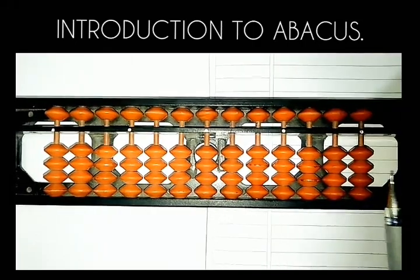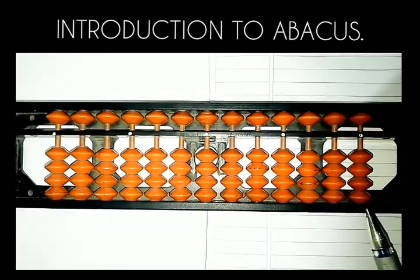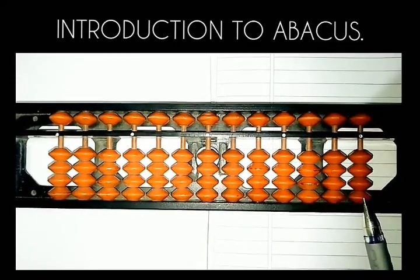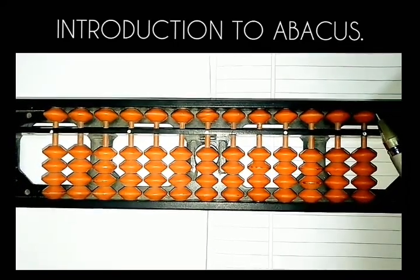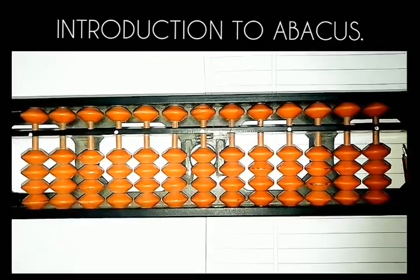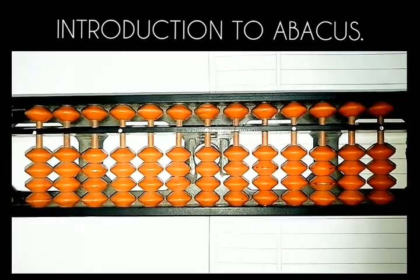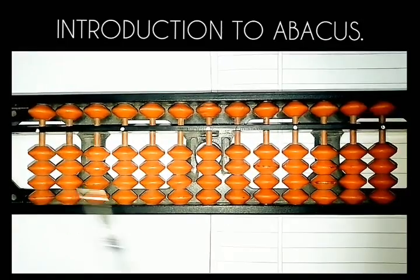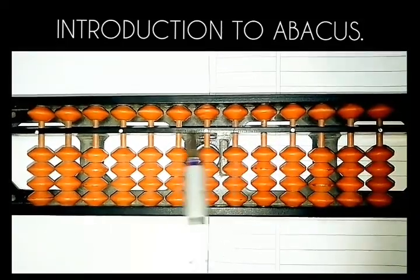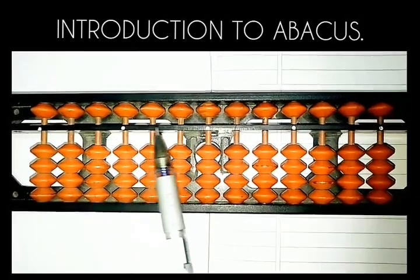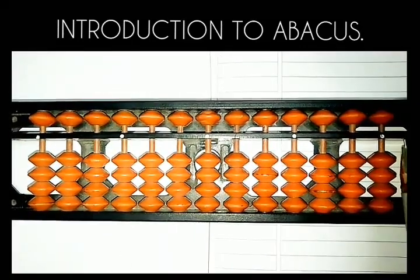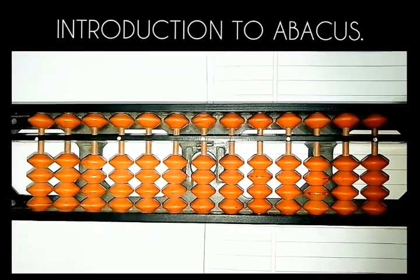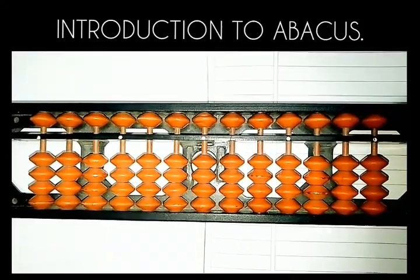Whenever the beads are away from the rod—that is, lower beads on the bottom side and upper beads on the higher side—the value on the Abacus scale is zero. As of now, nothing is touching this unit bar. None of the beads are touching this unit bar. Is any bead right now touching the bar? No. So the value of the Abacus scale is zero.